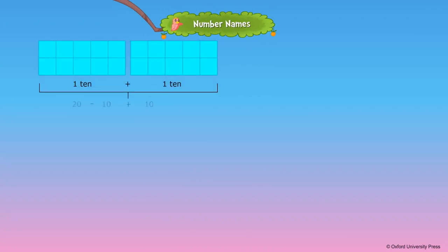1 ten and 1 ten makes 20. When 1 ones is added to 2 tens, we get 21. Similarly,